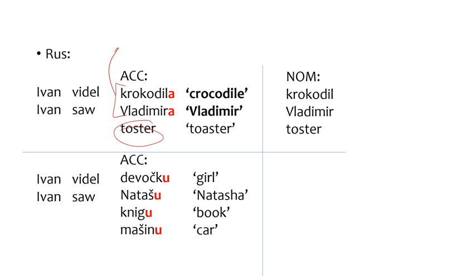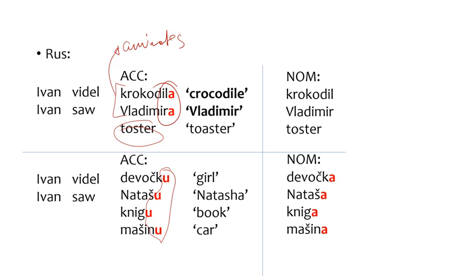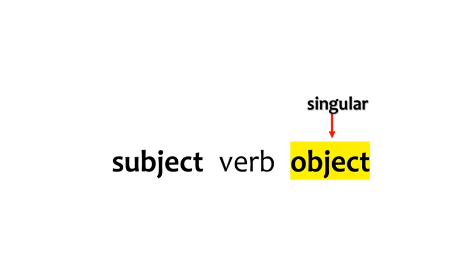The accusative forms of Crocodile and Vladimir are distinct from the accusative form of Toaster. Only the former two belong to the set of animates and are marked with the special form syncretic with genitive. Feminines — girl, Natasha, book, and car — have the same accusative morphology, distinct from nominative. Girl and Natasha denote animate beings, yet they have the same accusative ending as inanimate feminines, namely book and car. To summarize: all three Slavic languages have a special way to mark singular masculine animate objects.